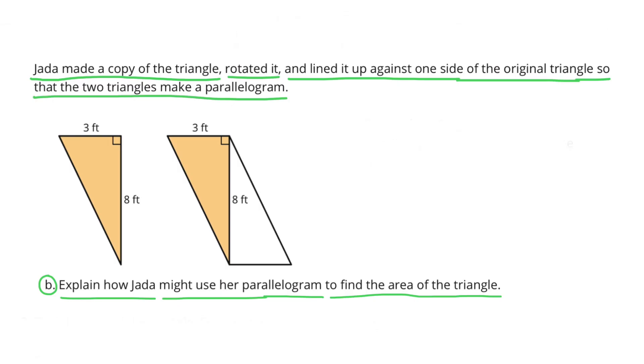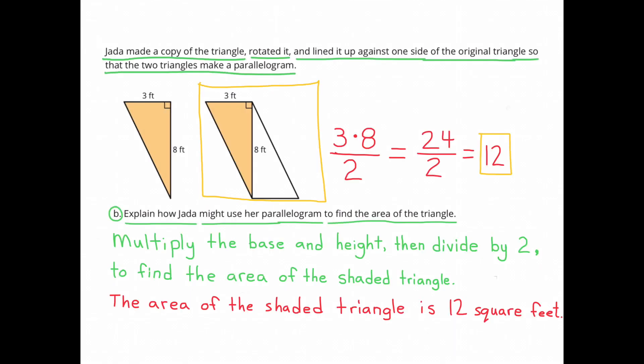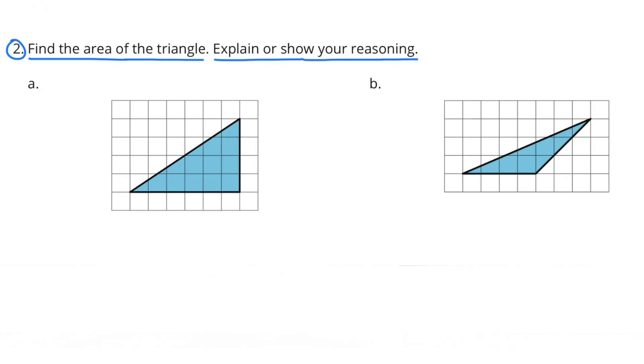Unlike Diego, Jada didn't make her parallelogram out of the same parts as the triangle. Since Jada used the original triangle and a copy of the original triangle, the area of her parallelogram is going to be twice the size of the area of the triangle. So when we multiply the base times the height, 3 times 8, we get 24. But since this area is twice the size of the area of the original triangle, we divide by 2. 24 divided by 2 is 12. The area of the original triangle is 12 square feet.